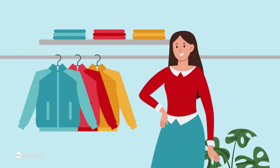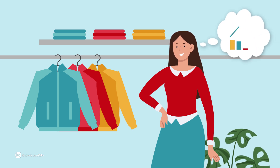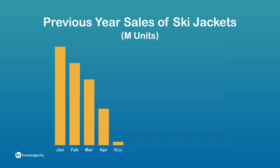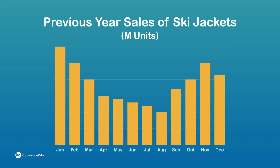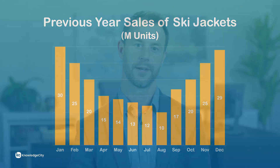For example, imagine you're a product manager for a popular line of ski jackets and you've been asked to develop a sales forecast for the next six months, starting in March. It makes sense to look at sales for the previous year to see where sales started to decline and adjust your sales forecast accordingly. Using data visualization of historical sales figures can be helpful in recognizing how seasonality affects sales volumes.